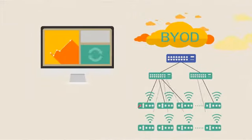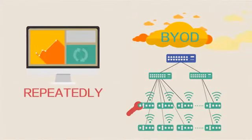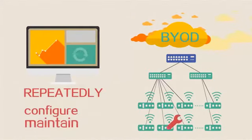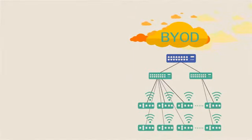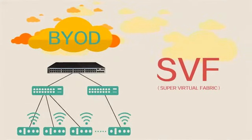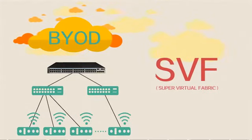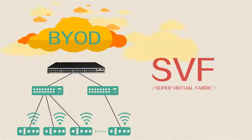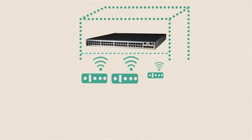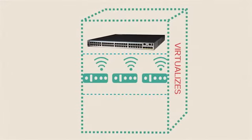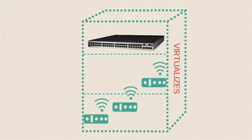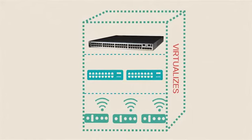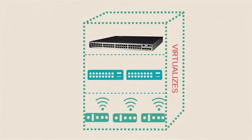In BYOD, IT maintenance personnel have to repeatedly configure and maintain a large number of network devices. S5720HI provides the Super Virtual Fabric, or SVF, function, which virtualises wireless access points into ports and virtualises access switches into its extended cards.